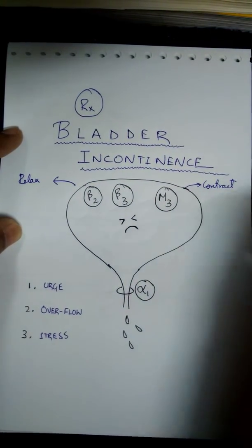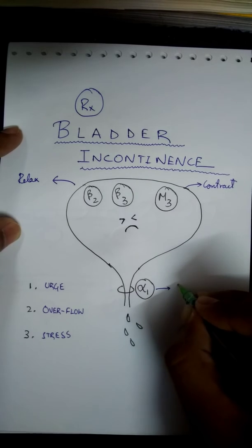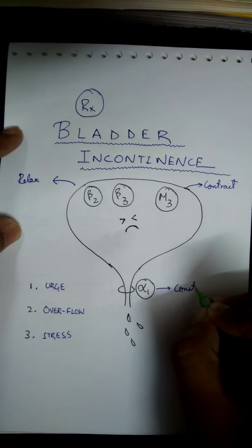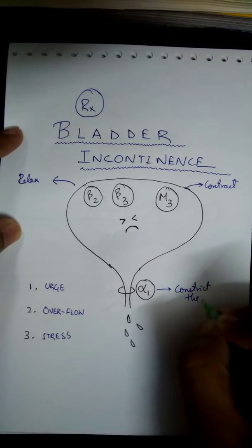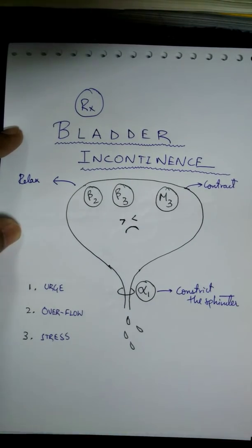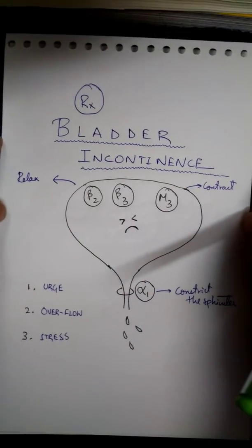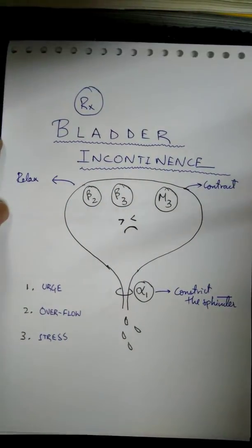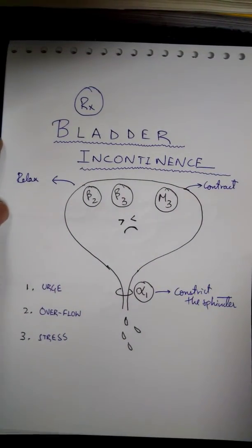Alpha 1 constricts the sphincter. Now, what exactly is bladder incontinence? Bladder incontinence is urination without warning - there is no warning bell and the patient urinates spontaneously.